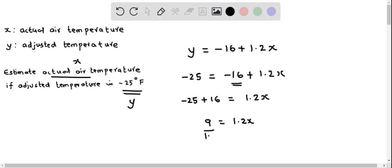We divide both sides by 1.2 so that we will get X. This implies negative 9 over 1.2.